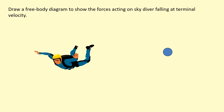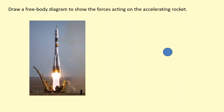Here we have a skydiver falling at terminal velocity, which means the forces are balanced and he's not accelerating. We have his weight acting downwards, mg, and then we have air resistance acting upwards.